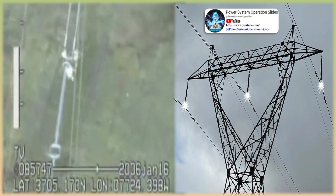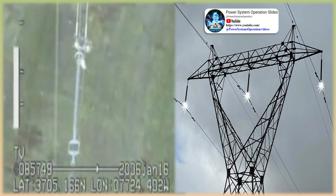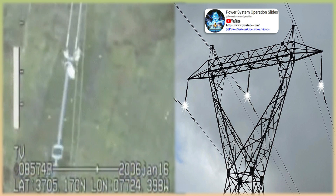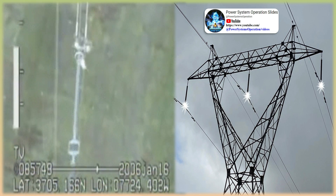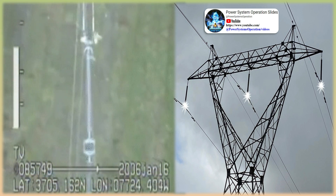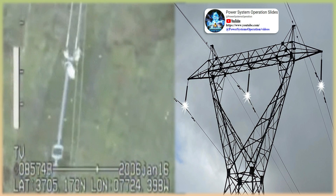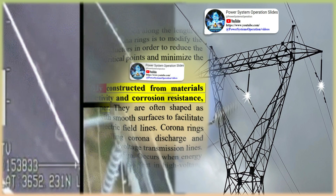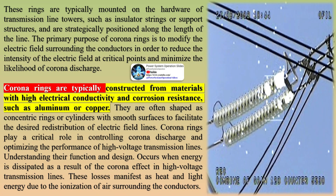A corona discharge is an electrical discharge caused by the ionization of a fluid such as air surrounding a conductor carrying a high voltage. It represents a local region where the air has undergone electrical breakdown and become conductive, allowing charge to continuously leak off the conductor into the air. Corona rings, also known as grading rings or anti-corona rings, are specialized devices installed on high-voltage transmission lines to control the electric field distribution and mitigate the corona effect.